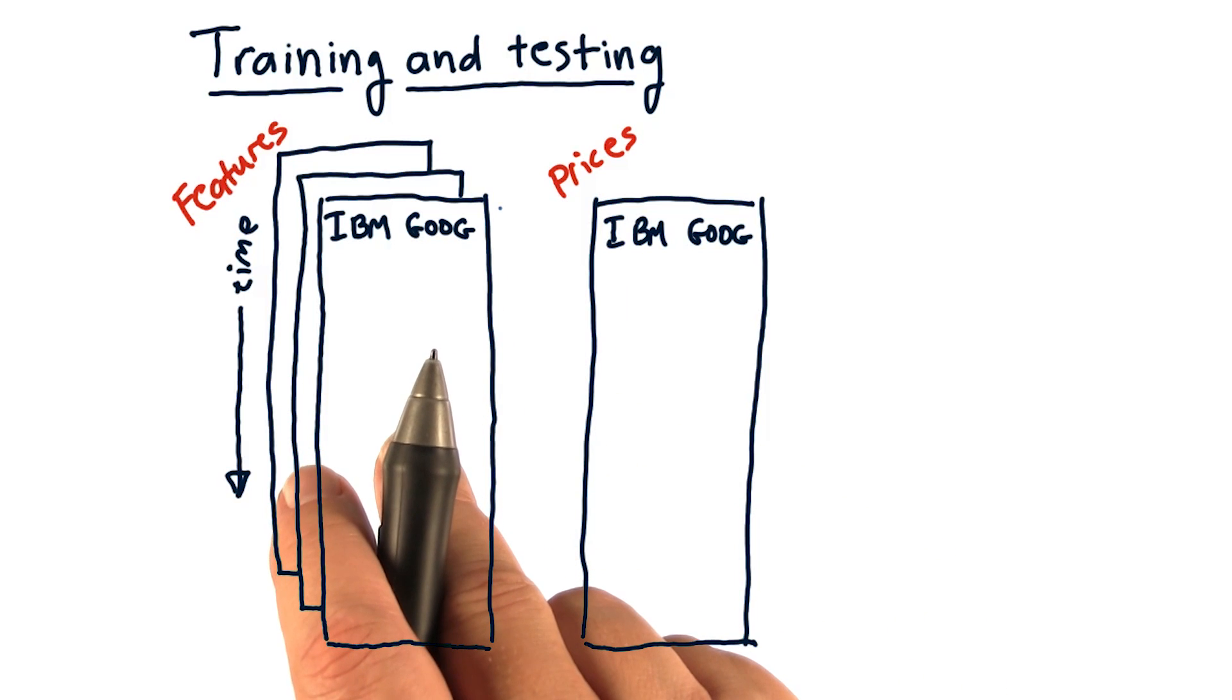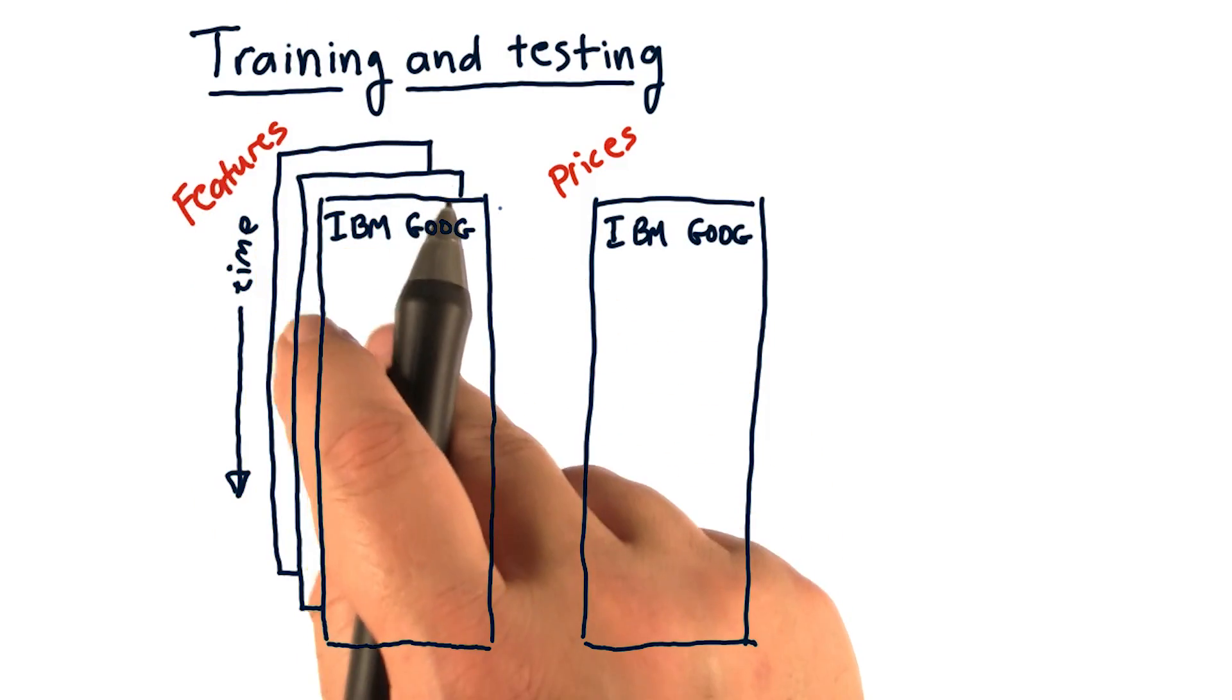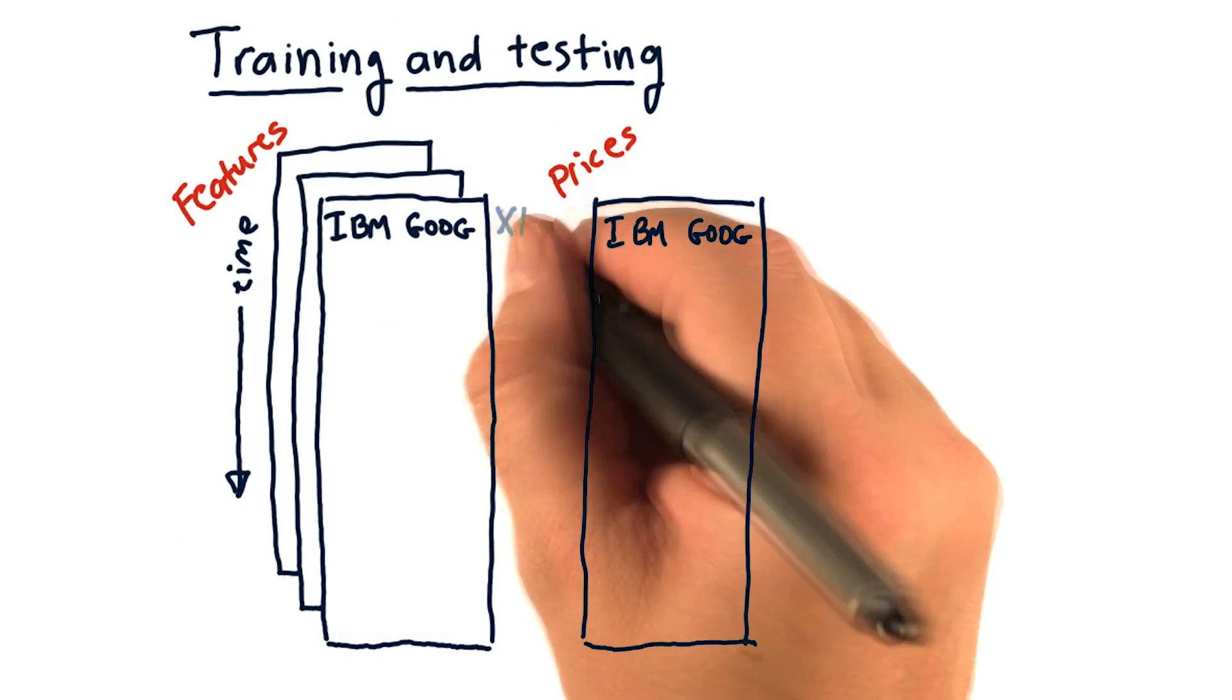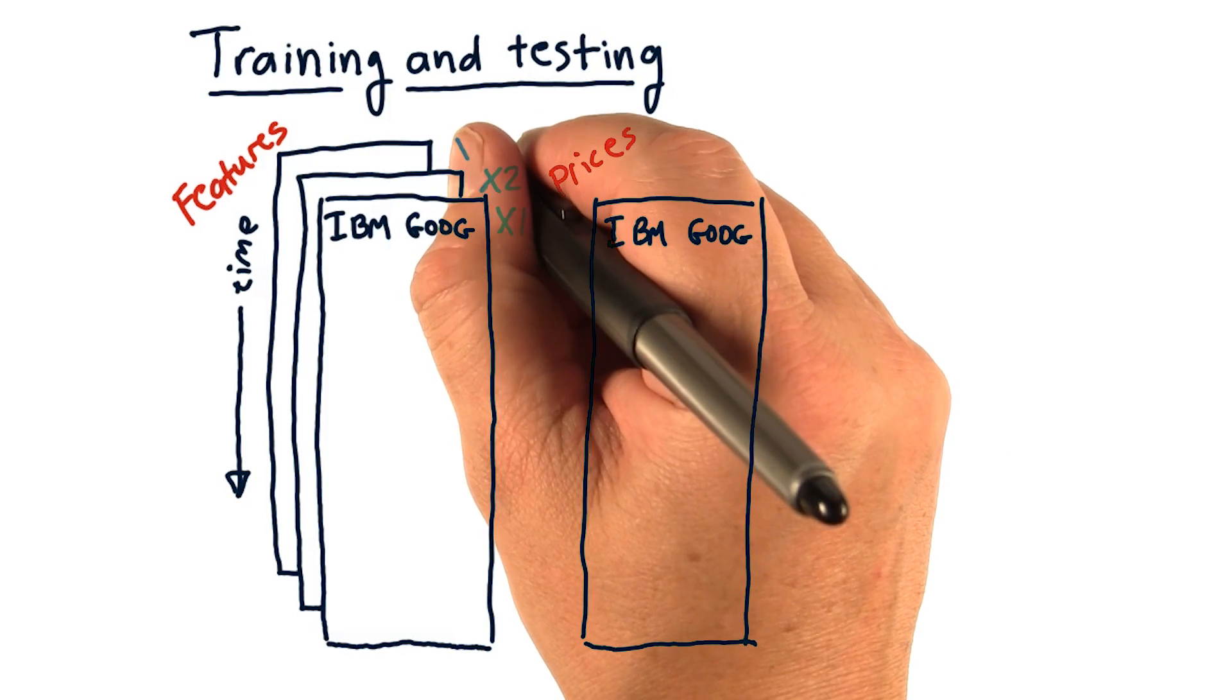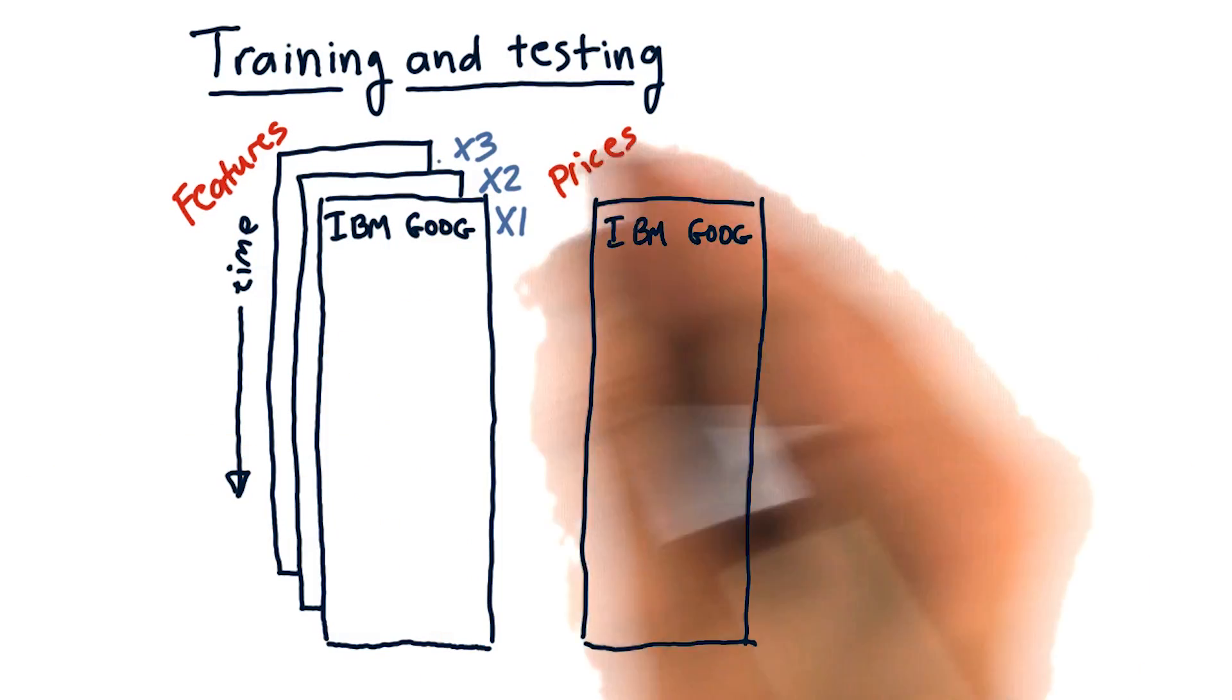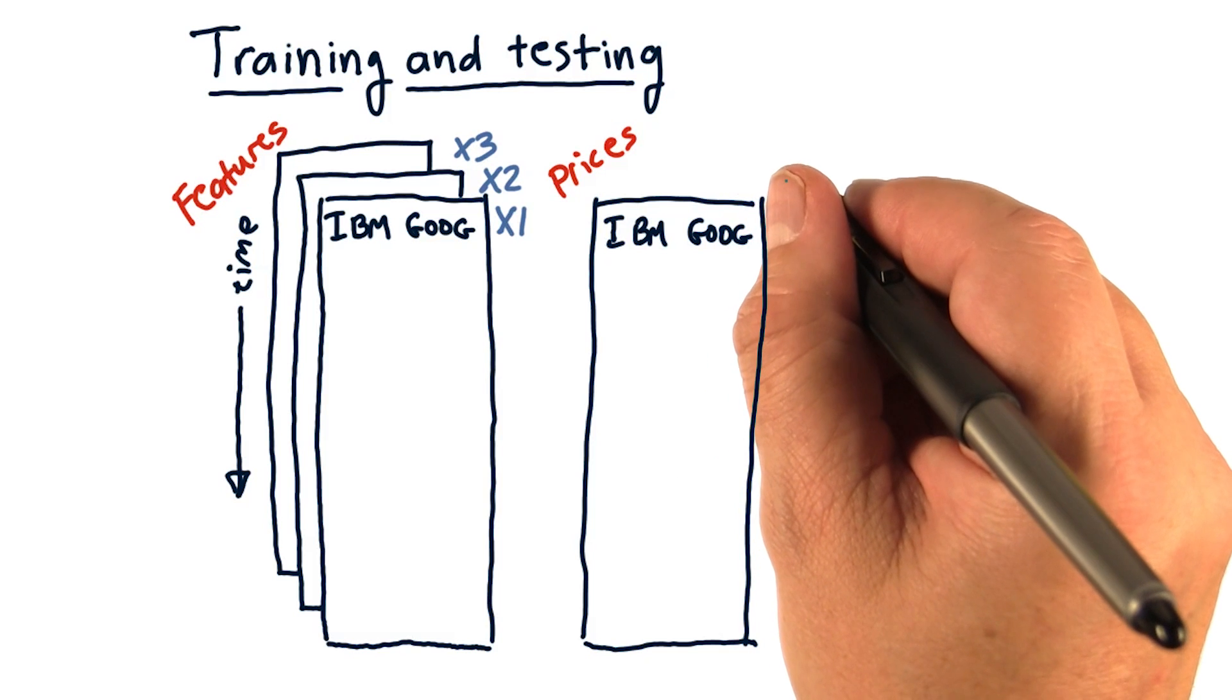So this is our x data, and if we've got multiple features, we've got multiple dimensions in x. So this might be x1, x2, x3, and so on. And this is our y data, which we're trying to predict.